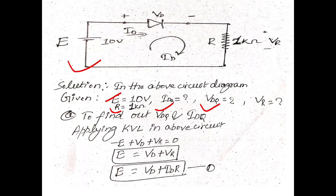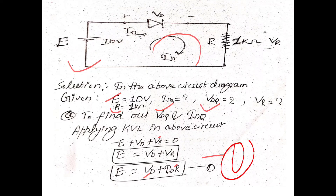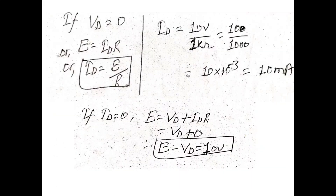To find out these values we need to apply KVL in the above loop. The current ID is flowing across the circuit. Applying KVL gives us: minus E plus VD plus VR equals 0, and from this we obtain E equals VD plus ID times R. This is our equation number 1.